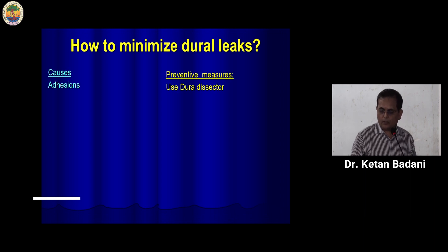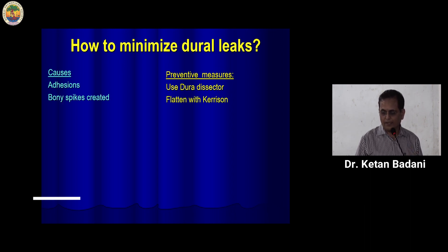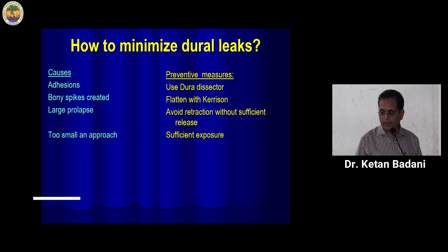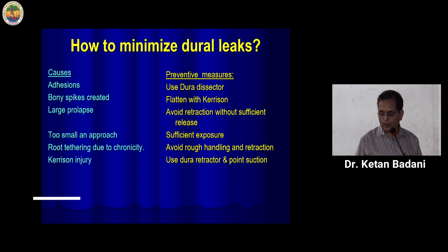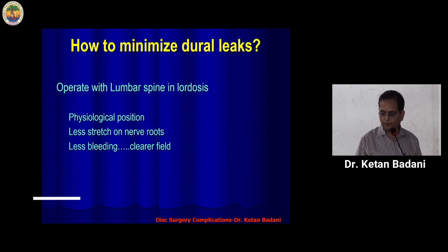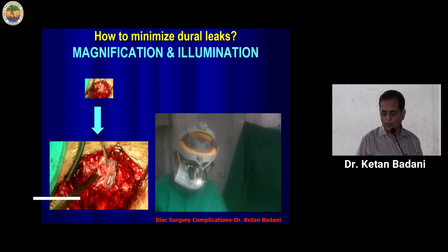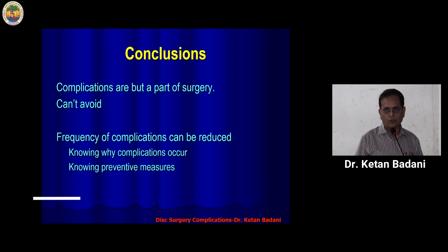How to minimize dural leaks: if there are adhesions, use a proper dura dissector; avoid creating bony spikes during surgery; avoid retraction without sufficient release; have sufficient exposure. Avoid rough handling and be gentle to the nerve roots. Use a dura retractor and proper suction to avoid Kerrison injury. In friable dura, you may have to use a dural patch or graft. Operating in lordotic position reduces stretch on the nerve root and dura, minimizing dural leaks. Using magnification and proper lighting can also help. If we know the reasons why things go wrong, then we can prevent them.